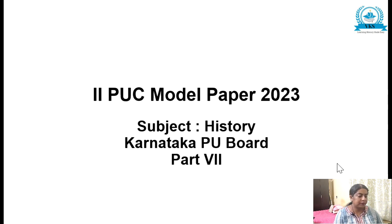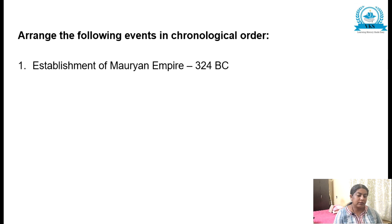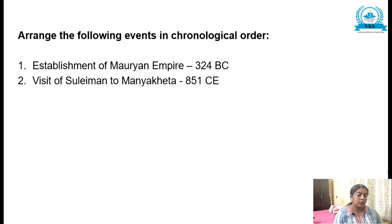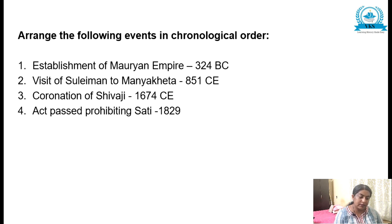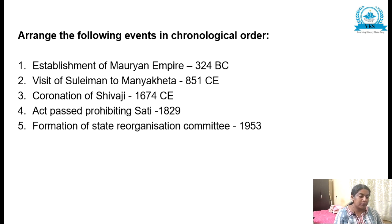Without wasting time, let us get into today's video. The next question in your model paper is: arrange the following events in chronological order. Here I have arranged it in the correct order. The first event is establishment of the Mauryan Empire, 324 BC; visit of Suleiman to Manyaketa, 851; coronation of Shivaji, 1674; Act passed prohibiting Sati, 1829; and formation of the State Reorganization Committee, 1953. This is the correct answer for the question given in your model paper.